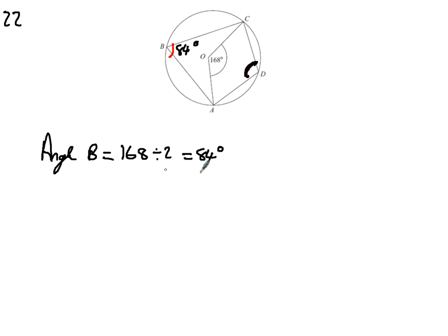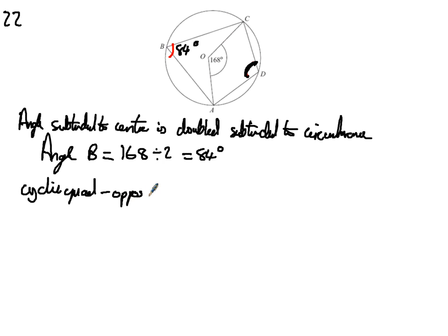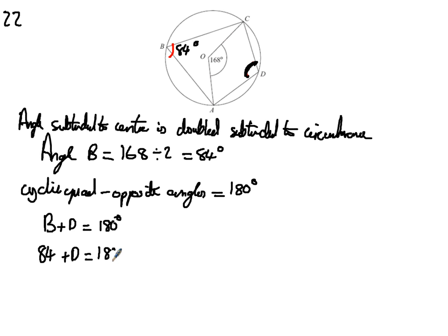We know it's a cyclic quadrilateral, and we give reasons for our working: angle subtended to centre is double that subtended to circumference. Also, for a cyclic quadrilateral, opposite angles equal 180 degrees when added up. So B plus D equals 180 degrees. I know B is 84, so 180 minus 84 gives 96 as my answer. Angle ADC is 96 degrees.